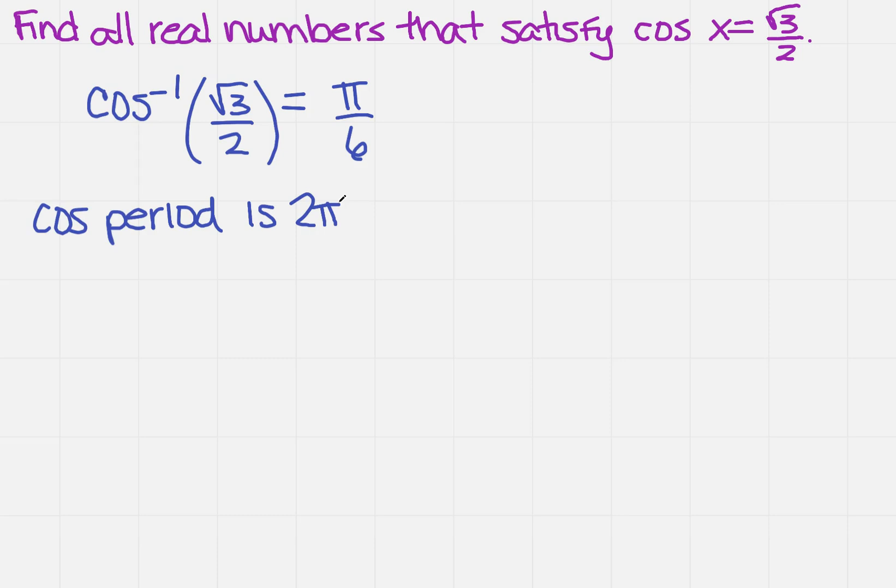So what does that mean? Well, that means that for my arc lengths, they're all going to be what I just found for my value here, so π/6, and then I'm going to add to that 2π times k, where k is an integer.